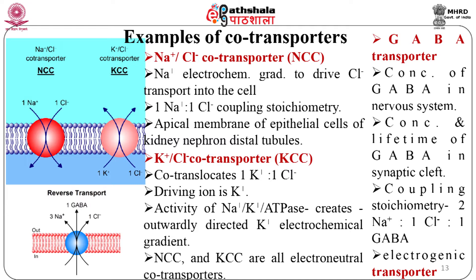The transporter for the inhibitory neurotransmitter gamma-aminobutyric acid (GABA) belongs to a large family of Na+ and Cl- coupled transporters. The GABA transporter, GAT, regulates the basal concentration of GABA in the nervous system and regulates the concentration and lifetime of GABA in the synaptic cleft. The GABA translocator couples the inward translocation of 2 Na+ and 1 Cl- to 1 GABA; therefore GABA transporters are electrogenic. Other transporters belonging to this family include transporters for neurotransmitters serotonin and dopamine, and also transporters for the osmolytes betaine and taurine.